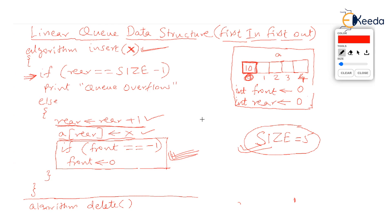Let's call insert a second time to insert 20. In the else, rear increases by 1, so rear which was 0 becomes 1. Rear decides the place of insertion, so a[1] becomes 20. The if condition checks if front is minus 1 — it is not, front is 0 — so no change is made to front. Front remains 0.